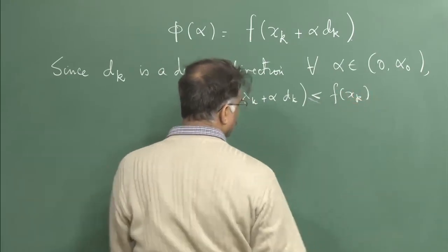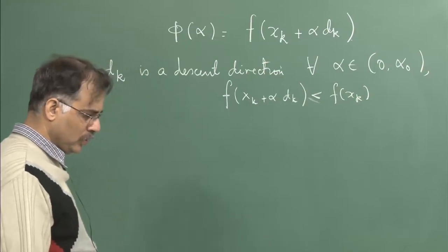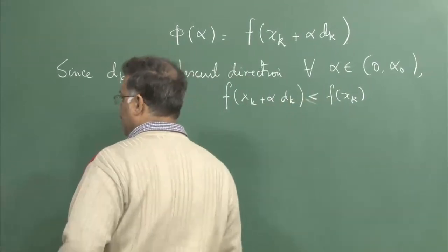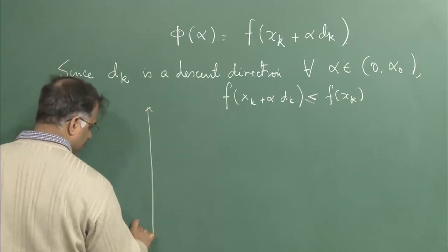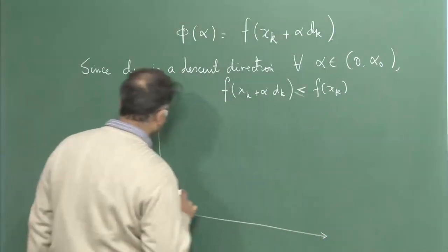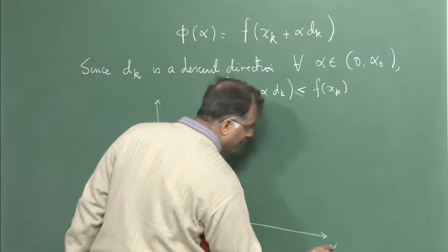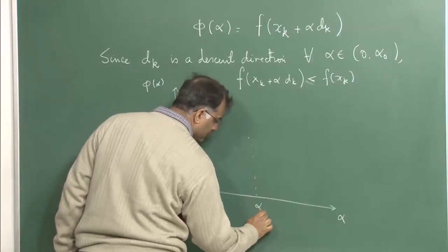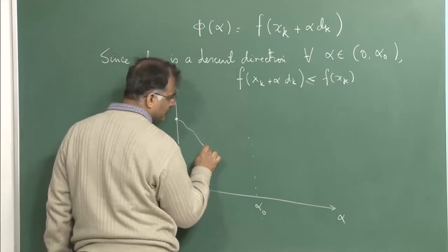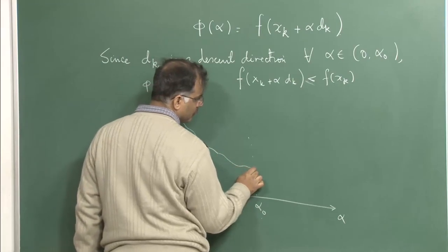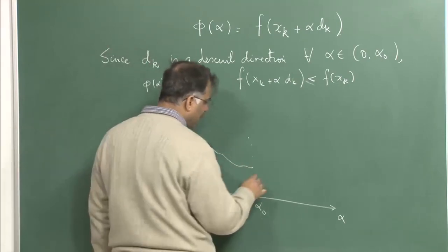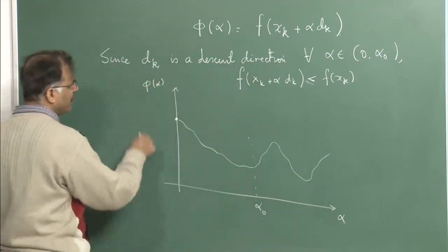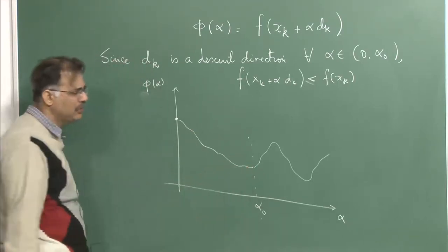This allows us to draw the function phi(alpha) better. If this is my f(x_k), with alpha on the x-axis and phi(alpha) on the y-axis, up to a certain threshold alpha_0 my function value is decreasing — it is less than f(x_k). After that it can increase and then decrease and so on. So this is my phi(alpha): till the threshold alpha_0 it decreases.